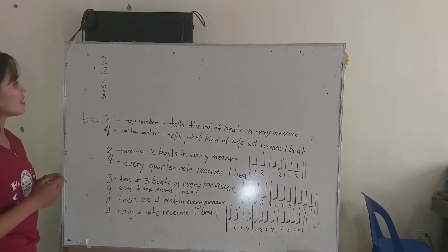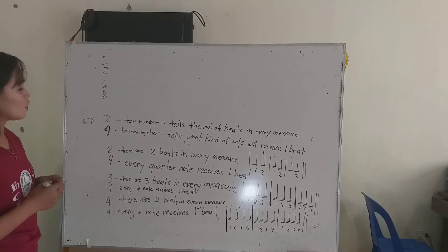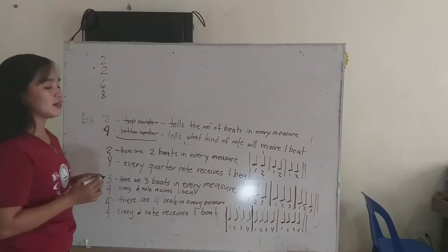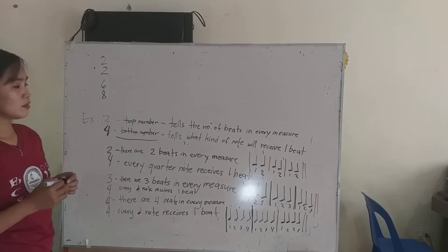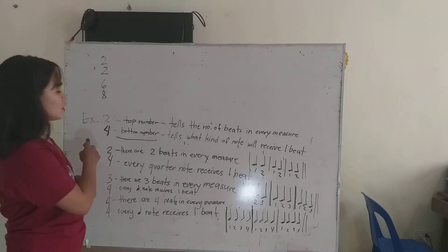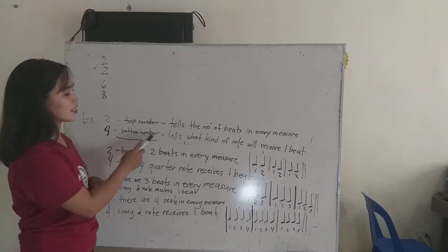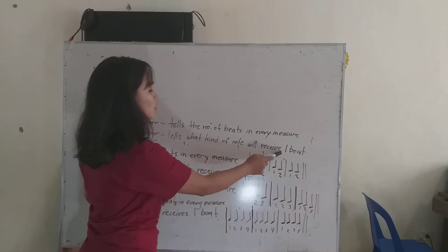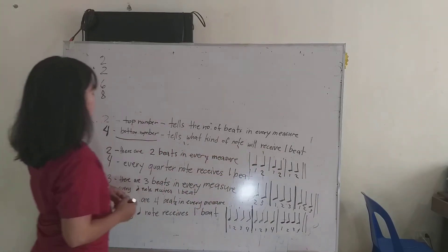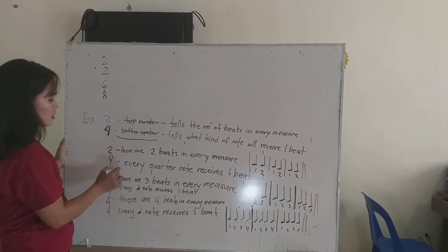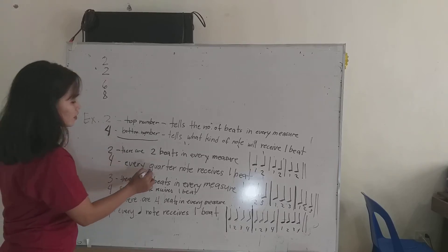We will study further about the bottom number of the time signature. What is the bottom number? It tells what kind of note will receive one beat. So ang 4, sabi natin ng nakaraan, ay quarter note.